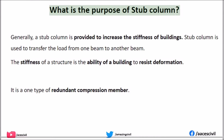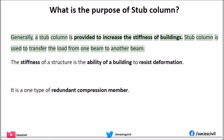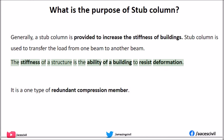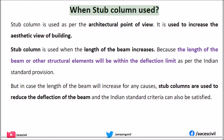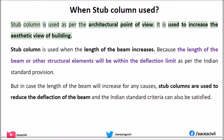What is the purpose of stub column? Generally, a stub column is provided to increase the stiffness of buildings. Stub column is used to transfer the load from one beam to another beam. The stiffness of a structure is the ability of a building to resist deformation. It is a type of redundant compression member. Stub column is used as per the architectural point of view and is used to increase the aesthetic view of a building.